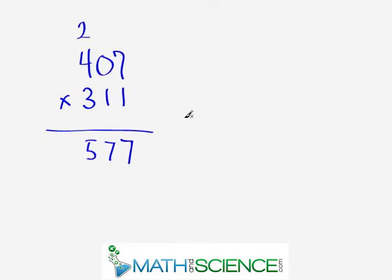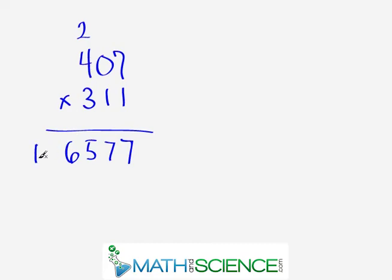The two just floats around for the next multiplication. In the leading two columns we do this crisscross: four times one is four, and the zero contributes nothing, so four plus the carried two gives us six. Finally, the last part is multiplying the leading column: four times three is 12, and there's nothing else to carry, so we put it down. The answer is 126,577.